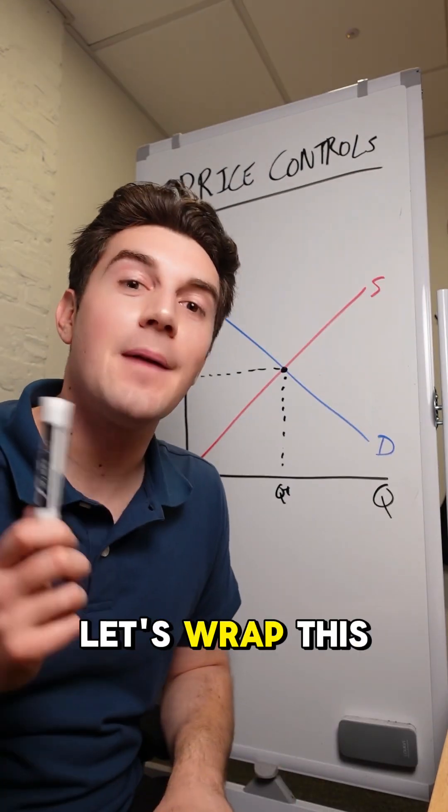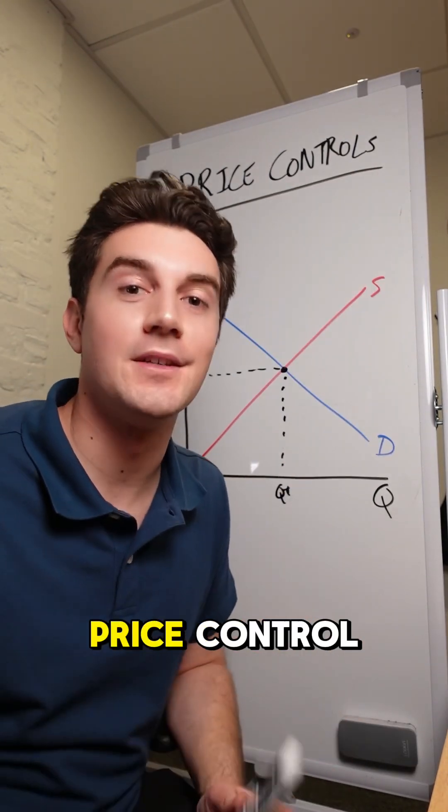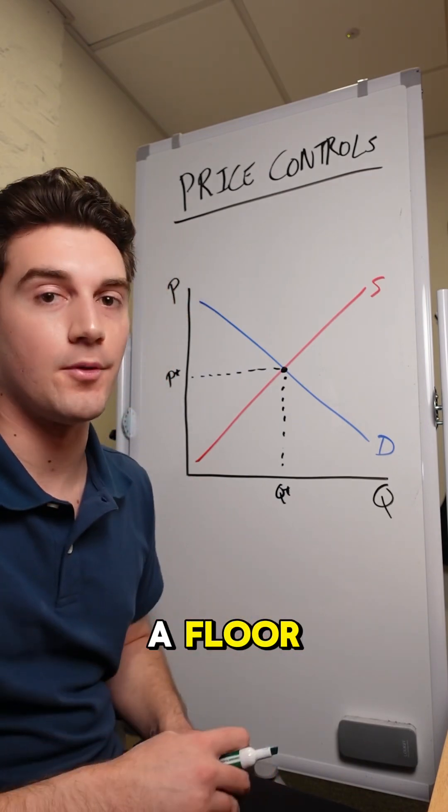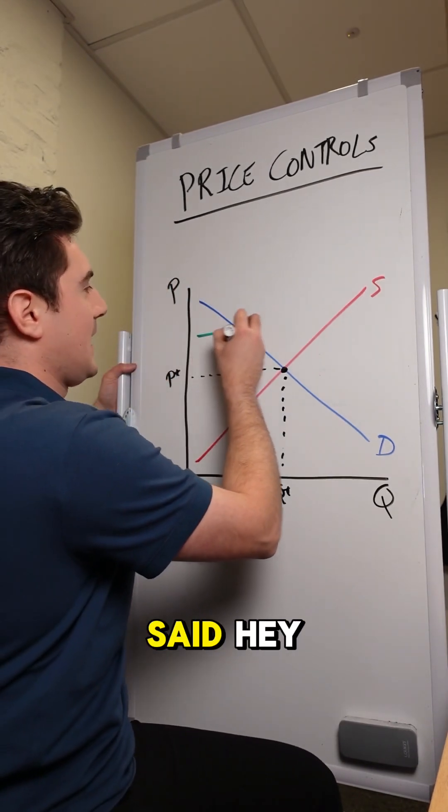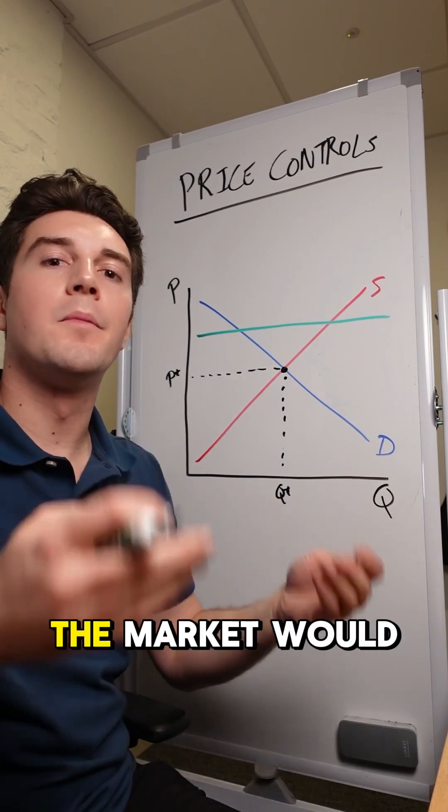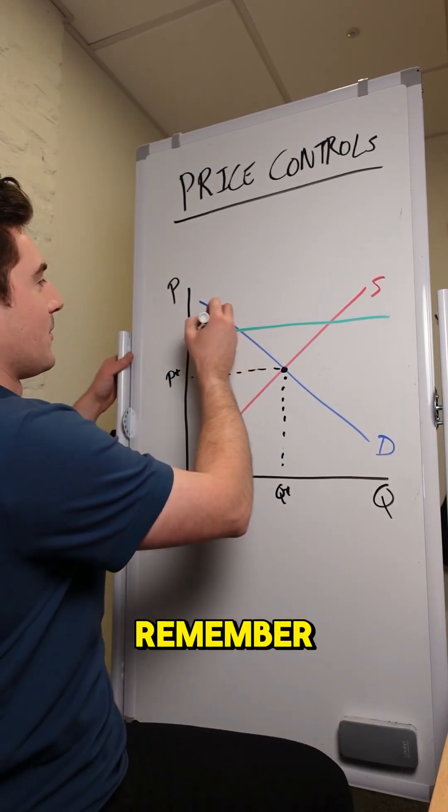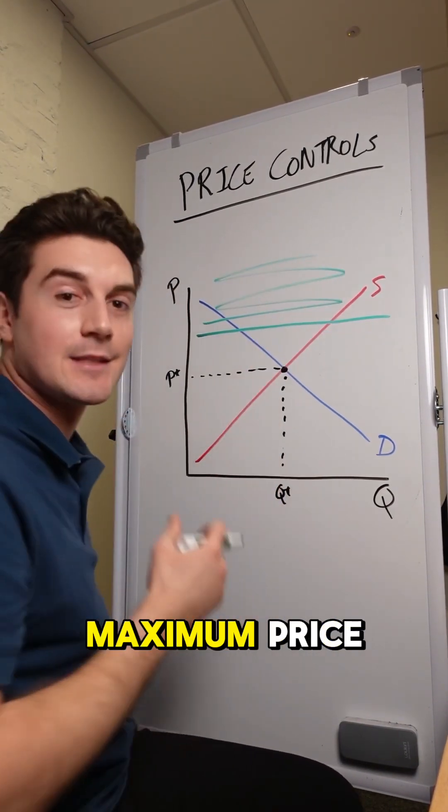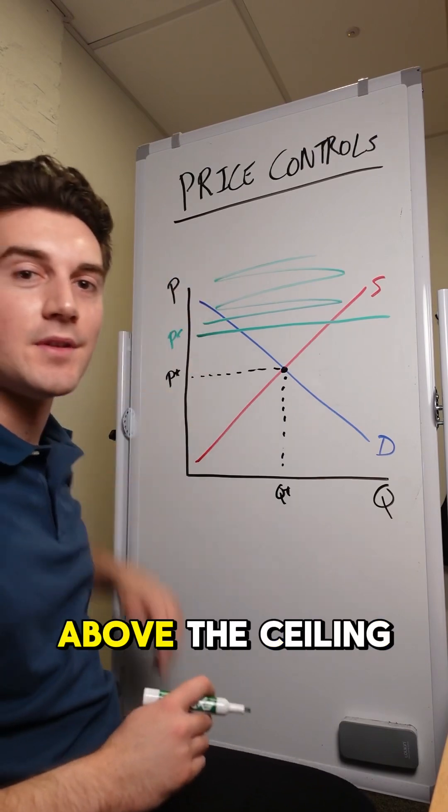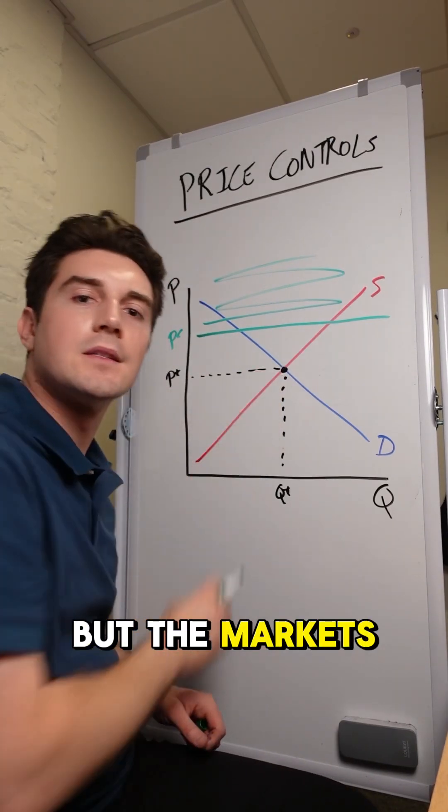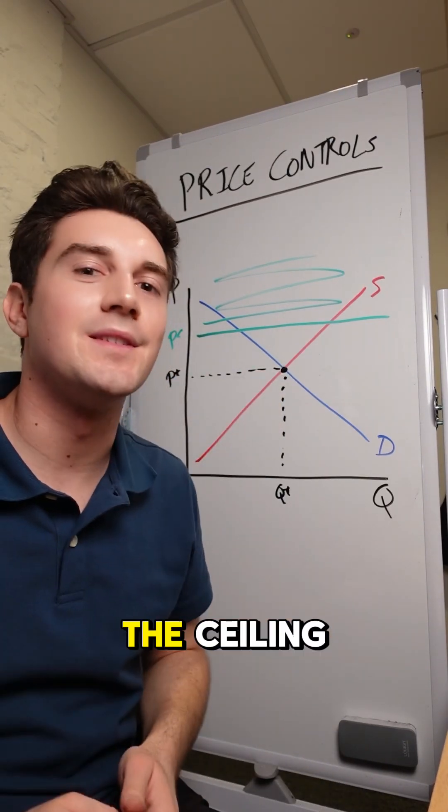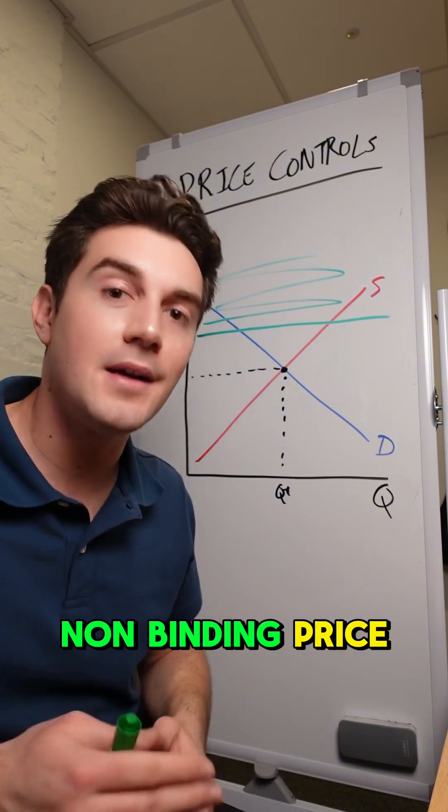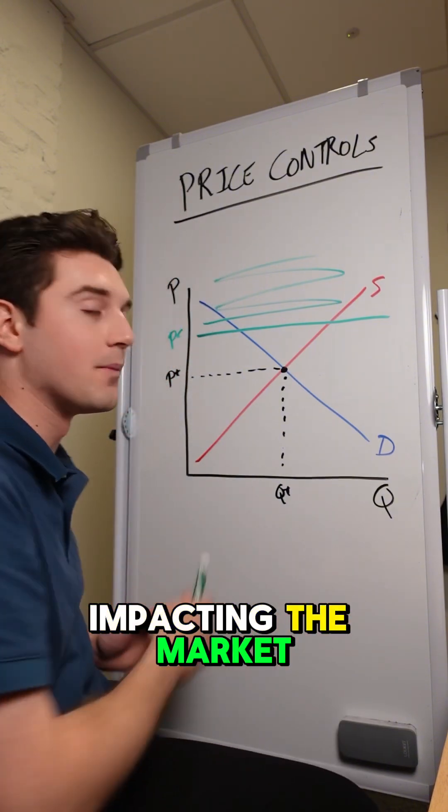As promised, let's wrap this up here with a non-binding price control. We'll start with a non-binding price ceiling and then move to a floor. Imagine the government came in and said, hey, this is our new price ceiling. The market would not care. Because remember, the price ceiling is setting a maximum price. So any prices above this ceiling are invalid, but the market's already operating below the ceiling. This is a non-binding price ceiling because it's not impacting the market equilibrium.